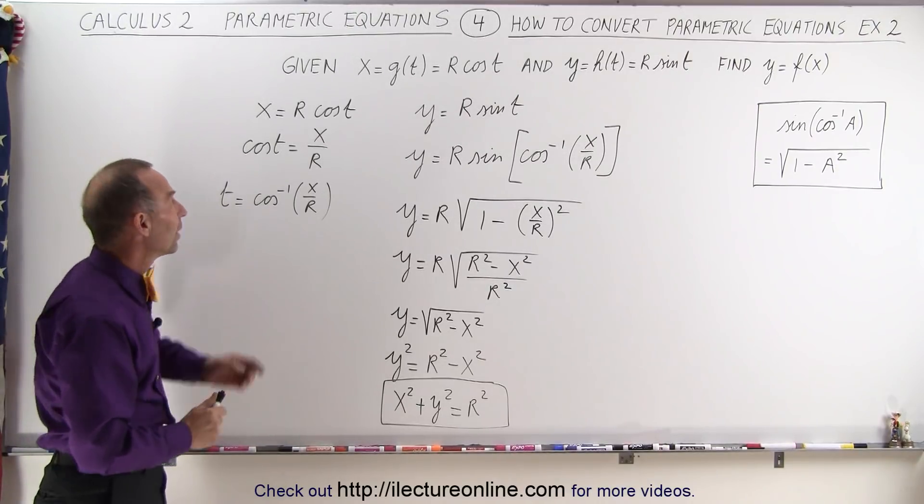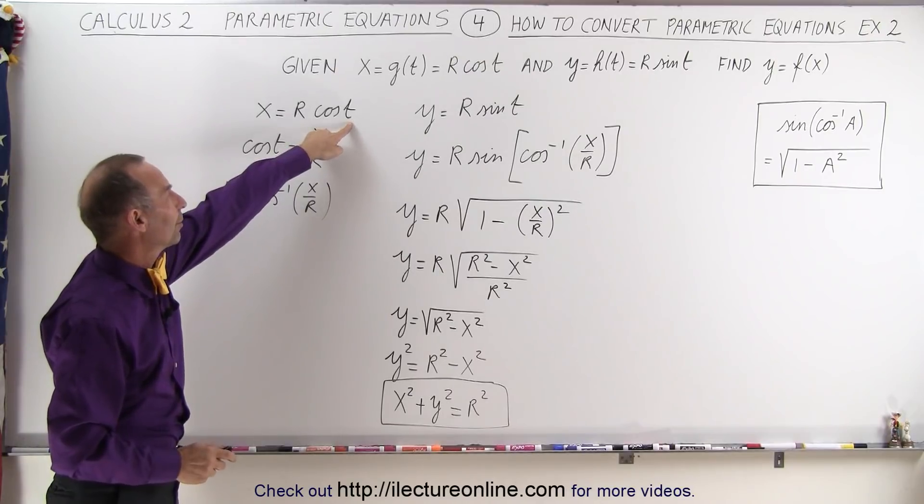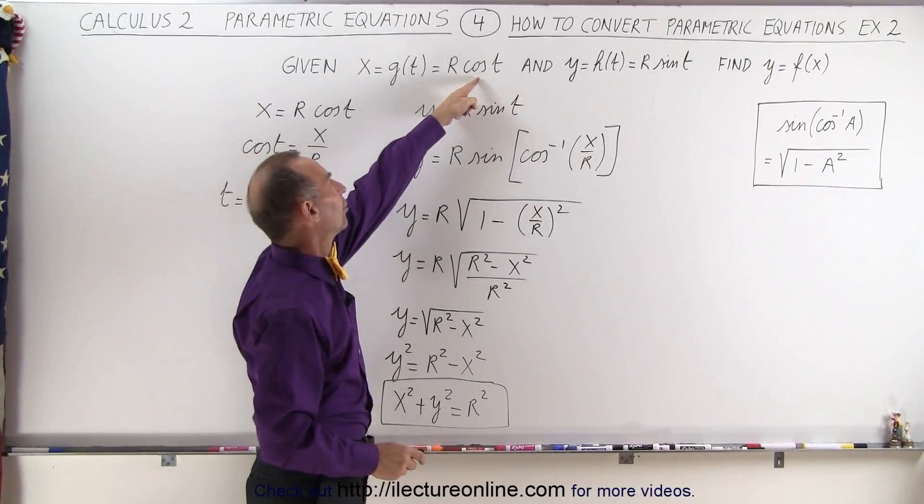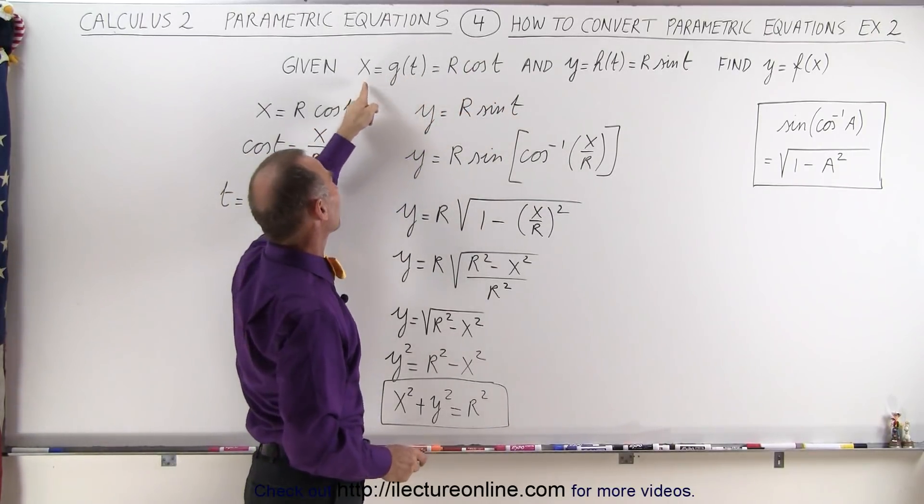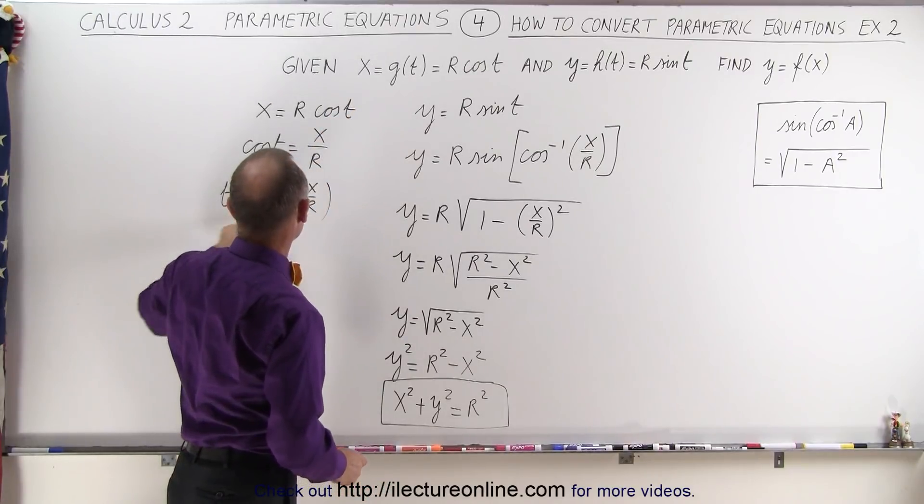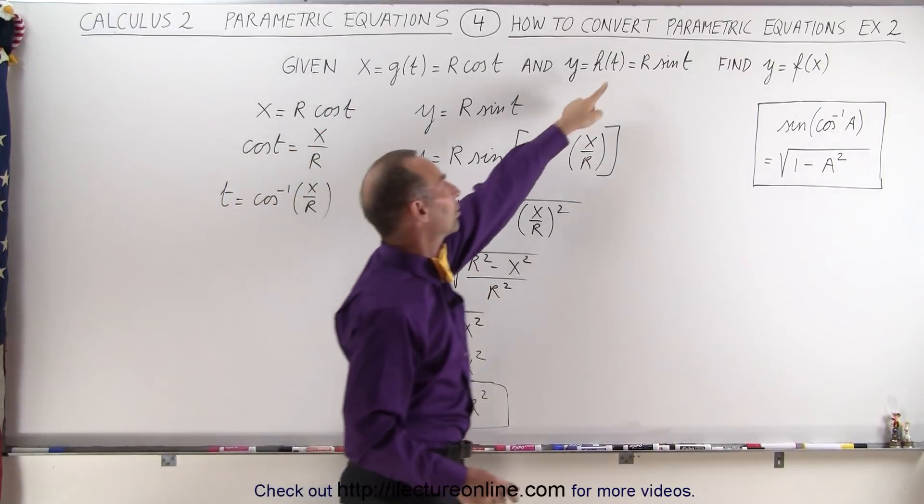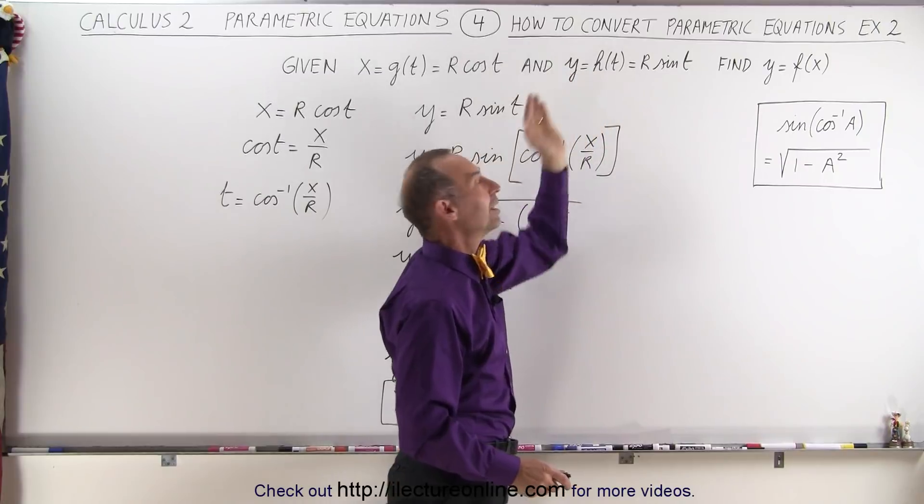So the technique is always the same. You solve for the variable in the parametric equation, solving for t in terms of the variable x. Once we have that, we plug that into the other equation to eliminate the variable t.